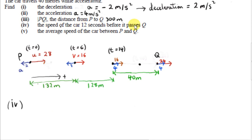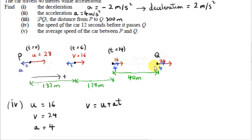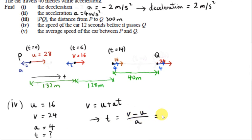Next, we want the speed of the car 12 seconds before it passes Q. We need to find the total time at which the car passes Q. For the last leg, U is 16, V is 24, and the acceleration is 4. We don't know the time. Using V equals U plus AT and rearranging — subtract U from both sides and divide by A — we get 24 minus 16 divided by 4, which is 8 divided by 4, equals 2 seconds.